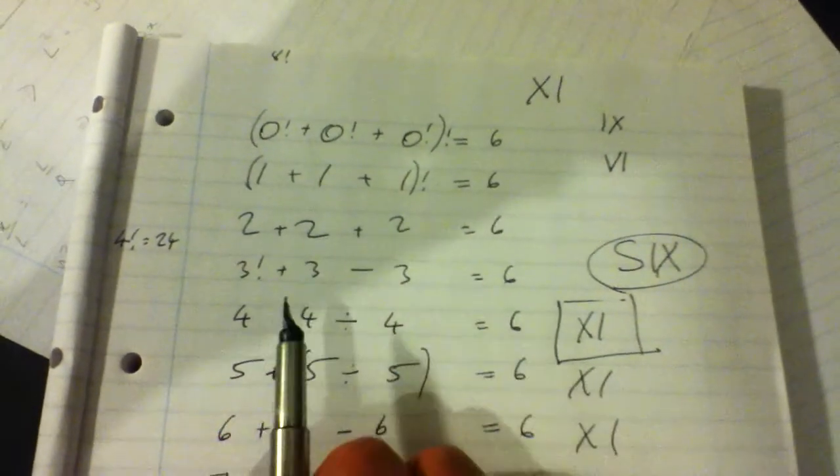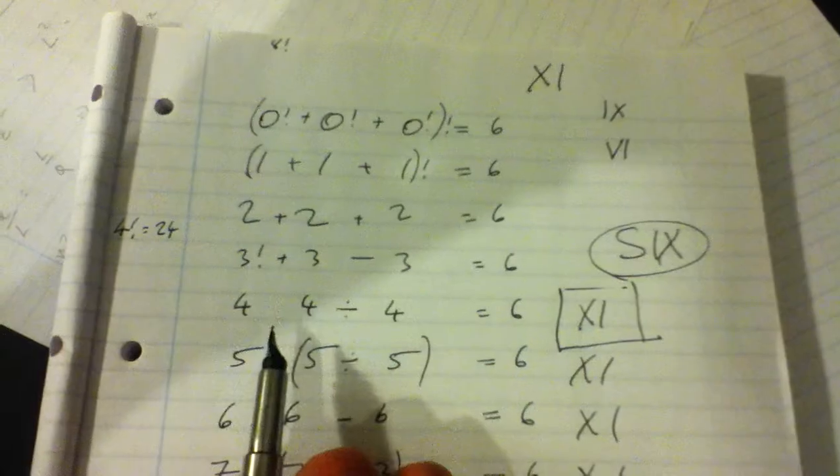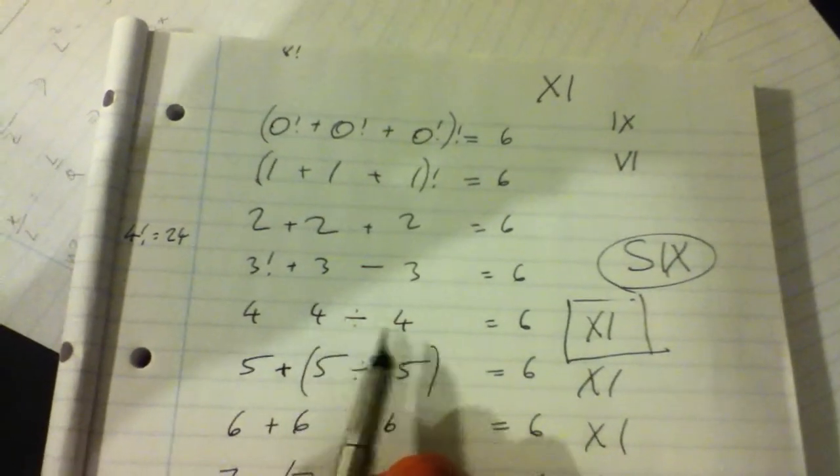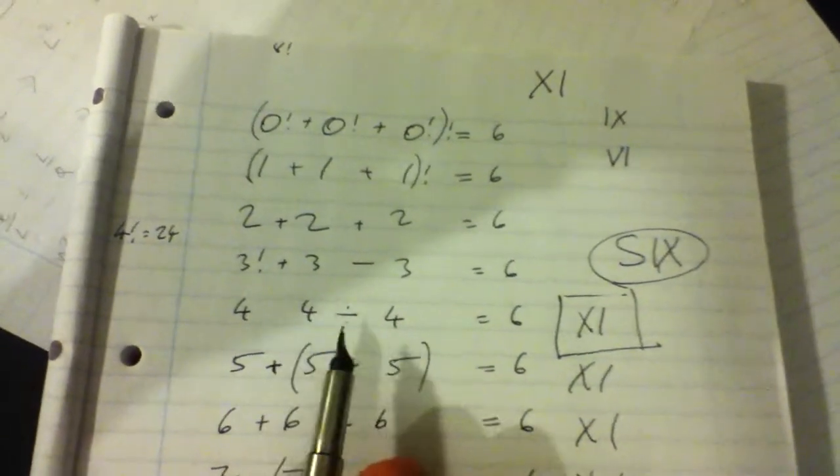But I soon realized that if I didn't put anything between the first two numbers and then divide by the last number, I'd always get 11.